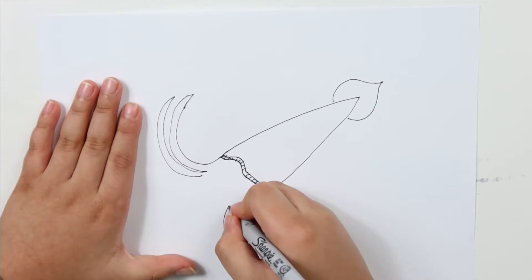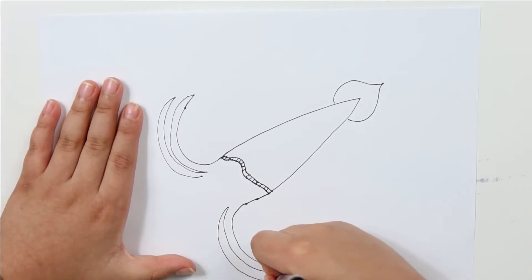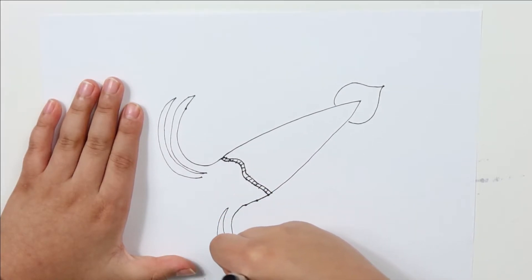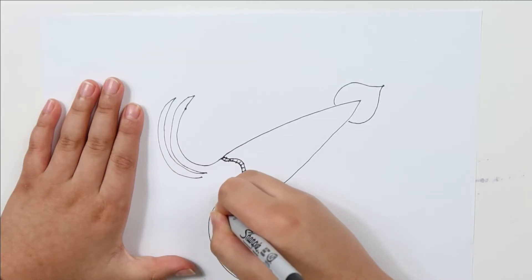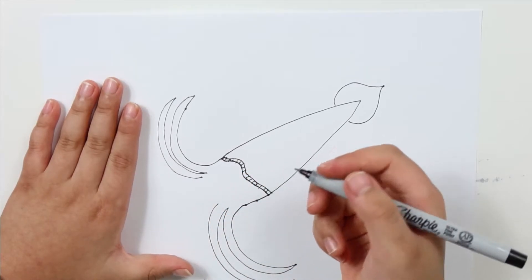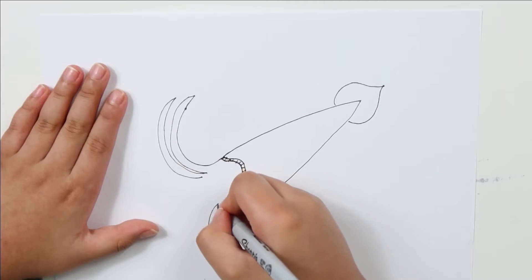Draw ten arms and two tentacles. The small ones are arms, but the big ones are tentacles.